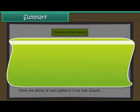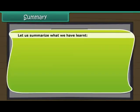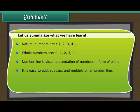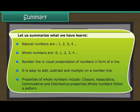Summary. Let us summarize what we have learnt. Natural numbers are 1, 2, 3, 4. Whole numbers are 0, 1, 2, 3, 4. A number line is a visual presentation of numbers in the form of a line. It is easy to add, subtract, and multiply on a number line. Properties of whole numbers include closure, associative, commutative, and distributive properties. Whole numbers follow a pattern.